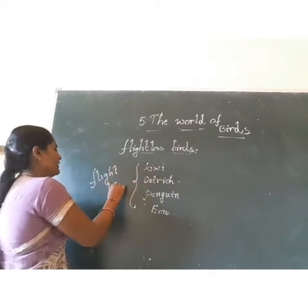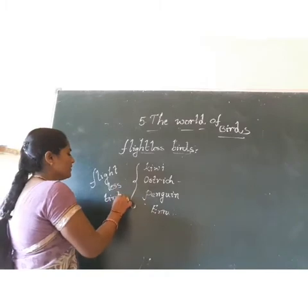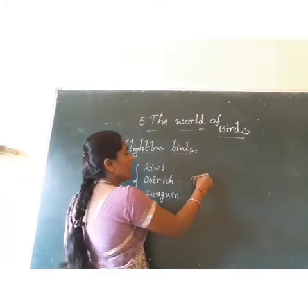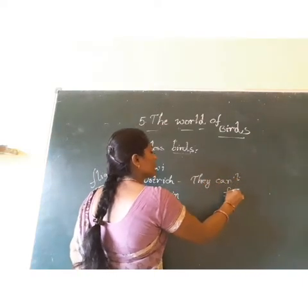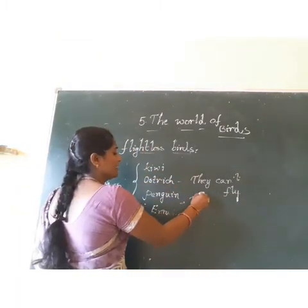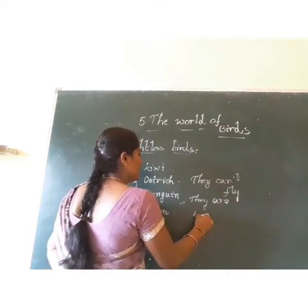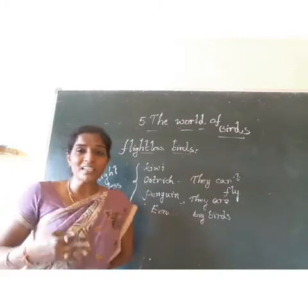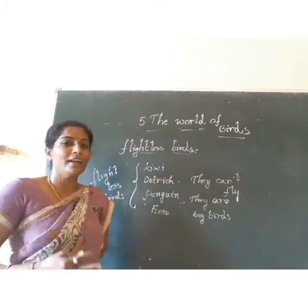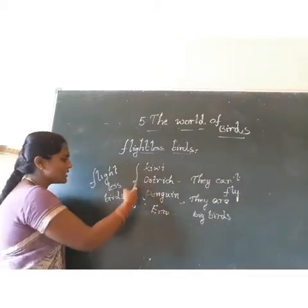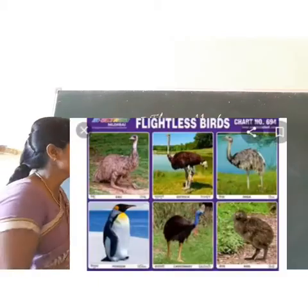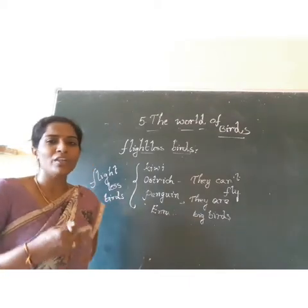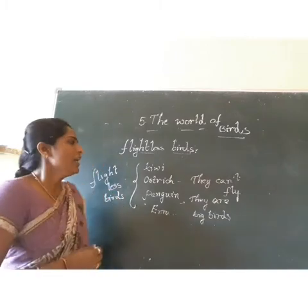Why do we call them flightless birds? Because they cannot fly. They are very big birds with very strong muscles. With their heavy body, they cannot fly in the air. But they still belong to the bird family. So we call these four birds — kiwi, ostrich, penguin, and emu — as flightless birds.